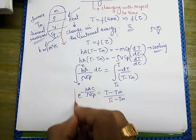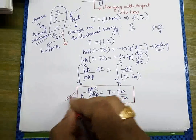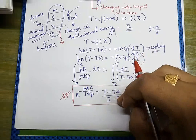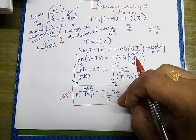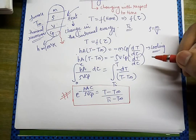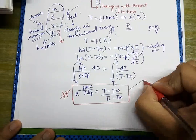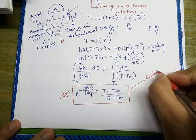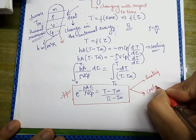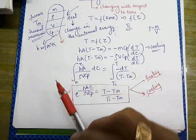This result must be remembered: e^(−hAτ/ρVCp) = (T − T∞)/(Ti − T∞). This equation is used to solve unsteady heat transfer problems. It can be applied both in the case of heating and in the case of cooling. Here T is the temperature at some final time, Ti is the initial temperature, and T_infinity is the temperature of the ambient surrounding.